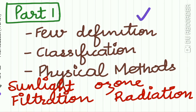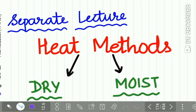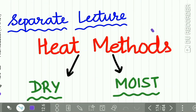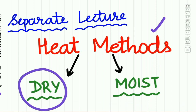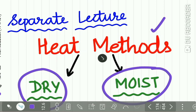In part 1, we will first study a few definitions which are extremely important from your viva point of view. Then we will study the classification of sterilization, and then the physical methods in detail — specifically sunlight, ozone, filtration, and radiation. In part 2, we will separately upload the heat methods, covering dry heat and moist heat in detail.